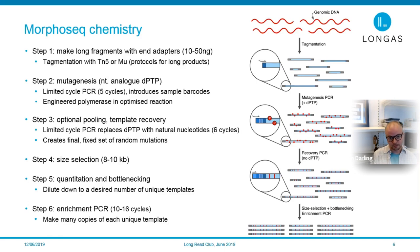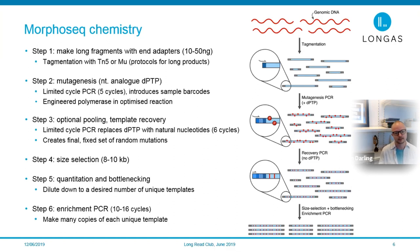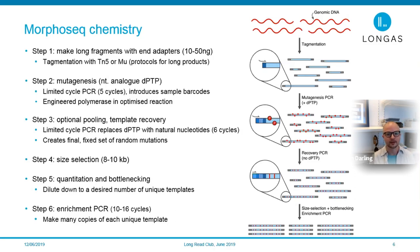In the third step we replace the DPTP with natural nucleotides. This creates a fixed final set of mutations in those long templates. We can then size select to a desired size range and quantitate and bottleneck the sample down to a desired number of templates to achieve the long template coverage we want. Finally, we do enrichment PCR to generate enough copies to go into a standard shotgun library prep and sequencing.